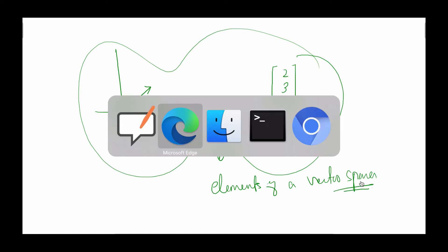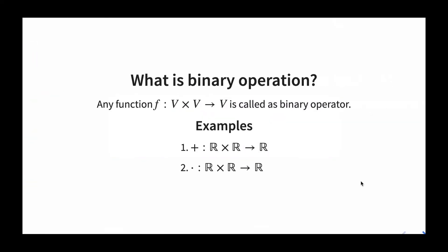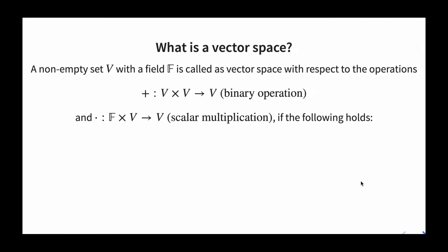A vector space is a non-empty set V in association with a field F, called a vector space with respect to two operations: addition (+), which is a binary operation, and scalar multiplication, where you take a scalar from field F and a vector from V, multiply them, and get another vector in V.